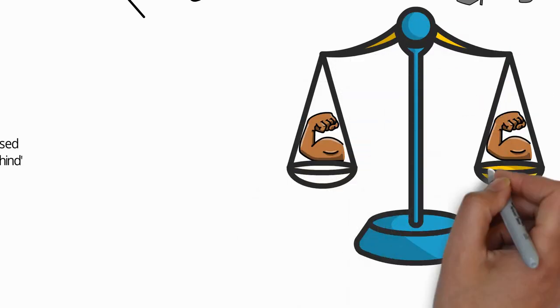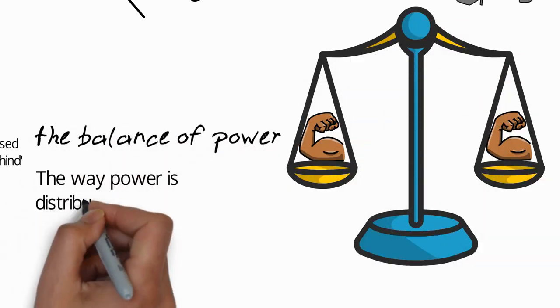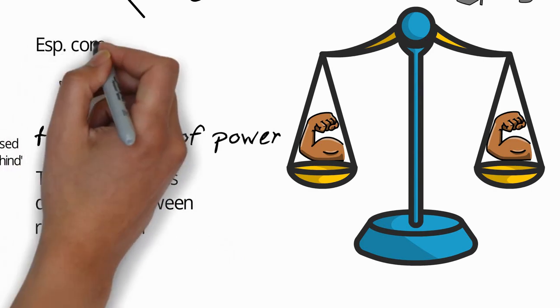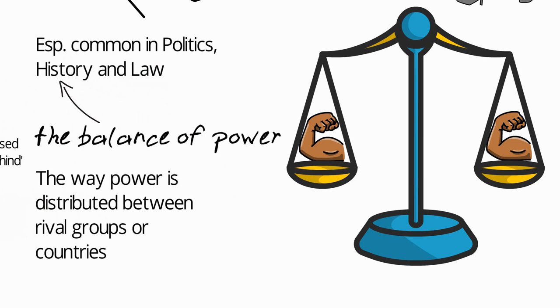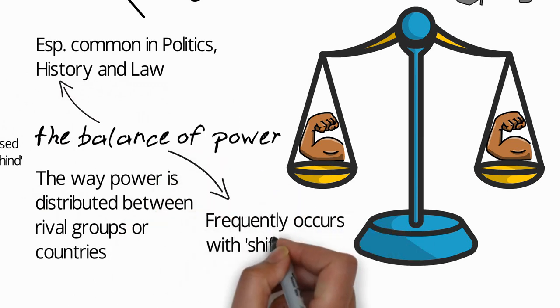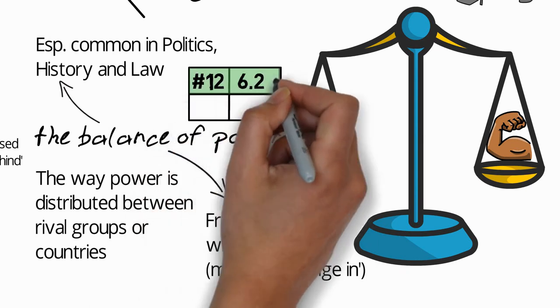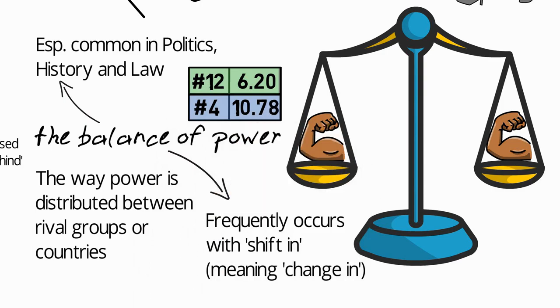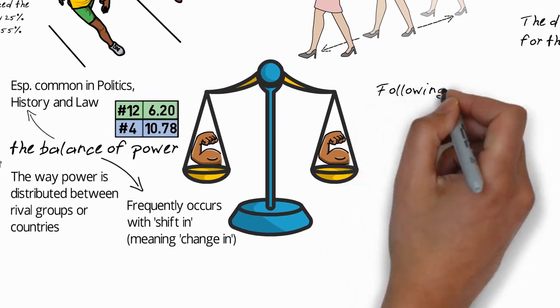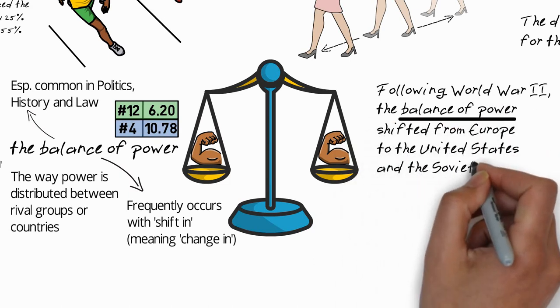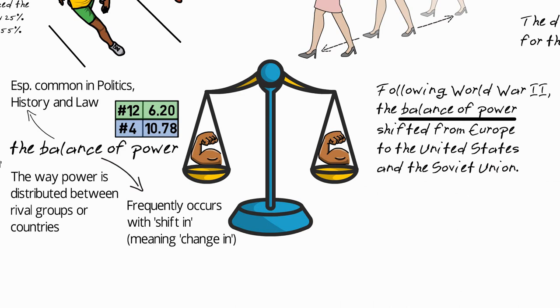The second action idiom is the balance of power, which means the way power is distributed between rival groups or countries. Because of the meaning, this idiom is especially common in politics, history and law. And it frequently occurs with the verb shifting, which means changing. And it's common in academic writing and speaking, but especially in academic speaking where it's the fourth most common idiom. For example, following World War Two, the balance of power shifted from Europe to the United States and the Soviet Union. In other words, before World War Two European countries were the most powerful in the world, whereas after it, it was the United States and the Soviet Union.